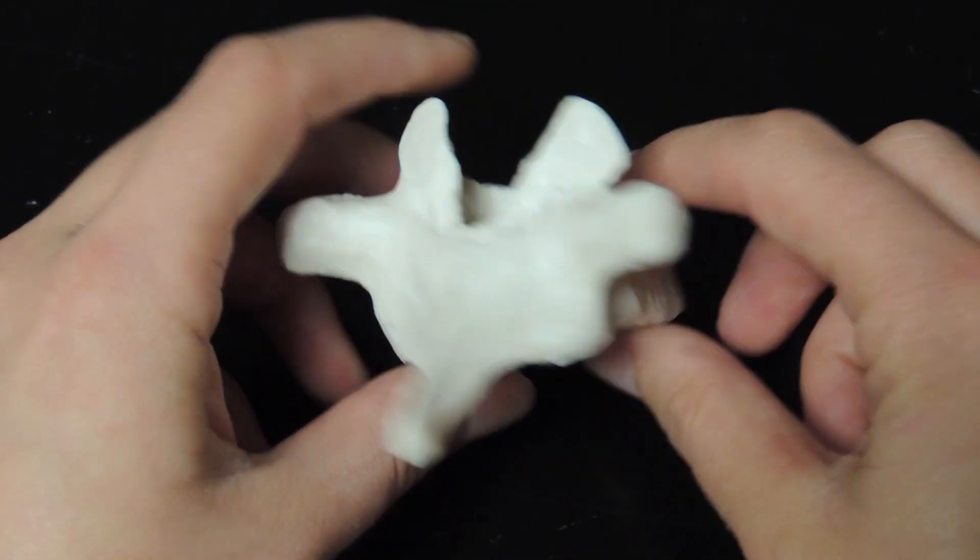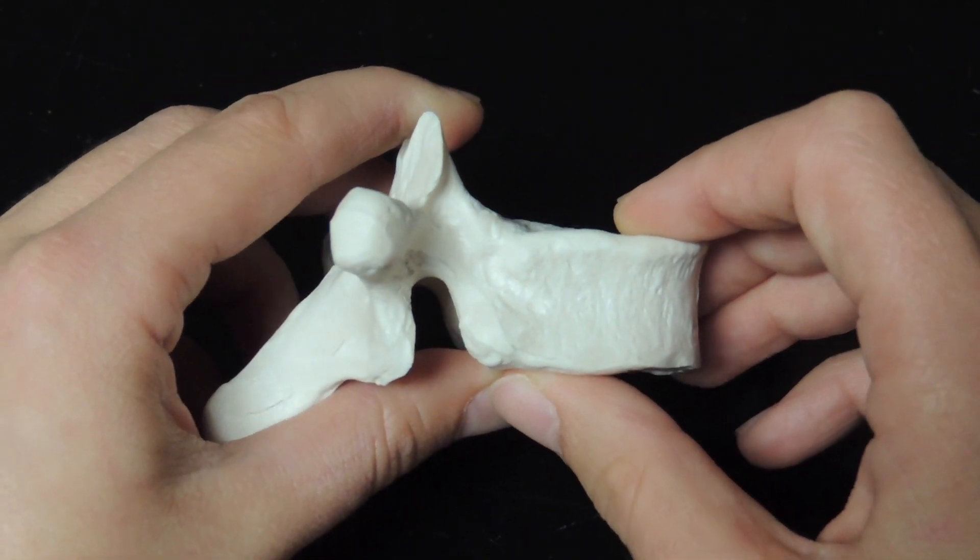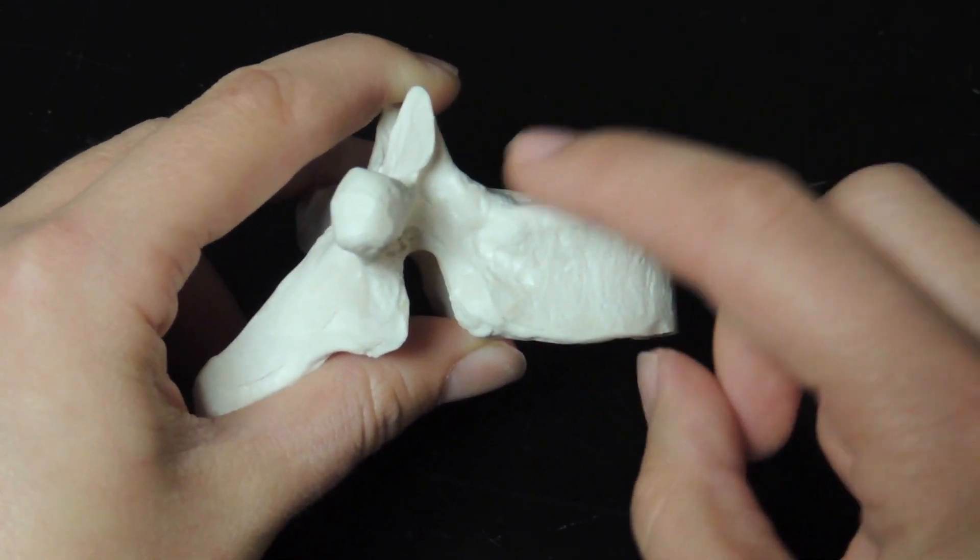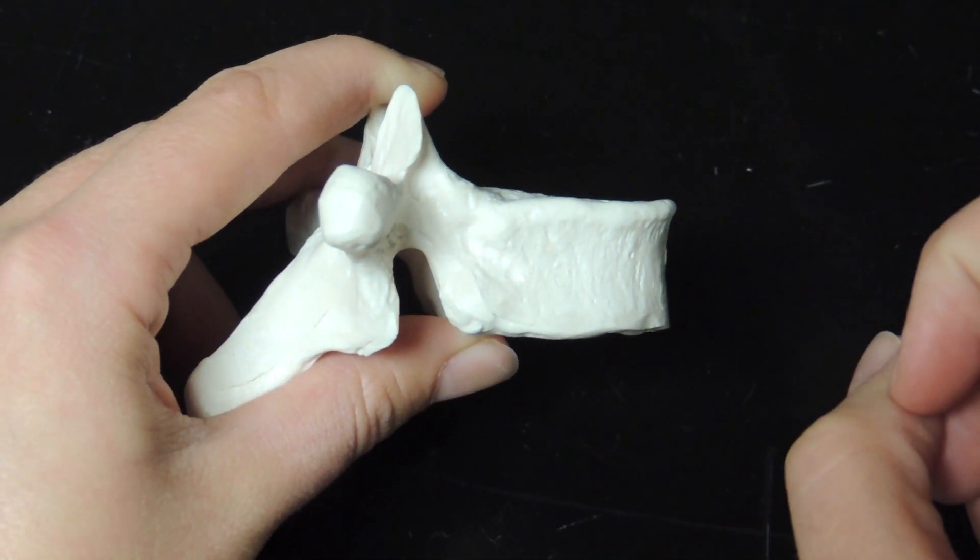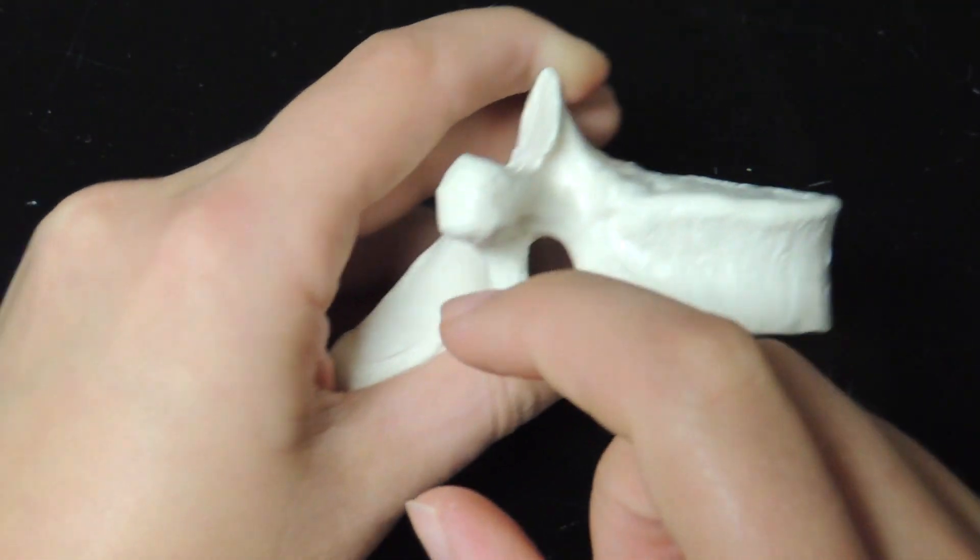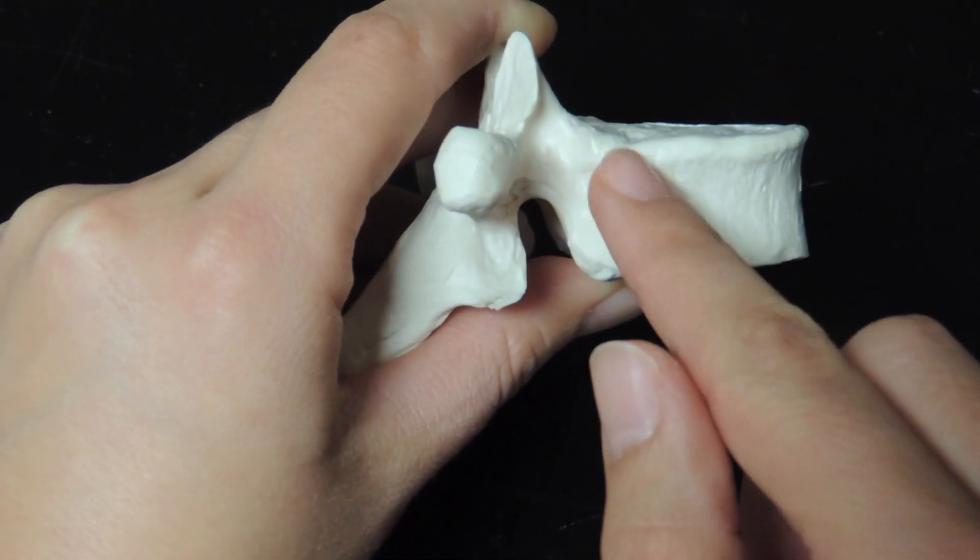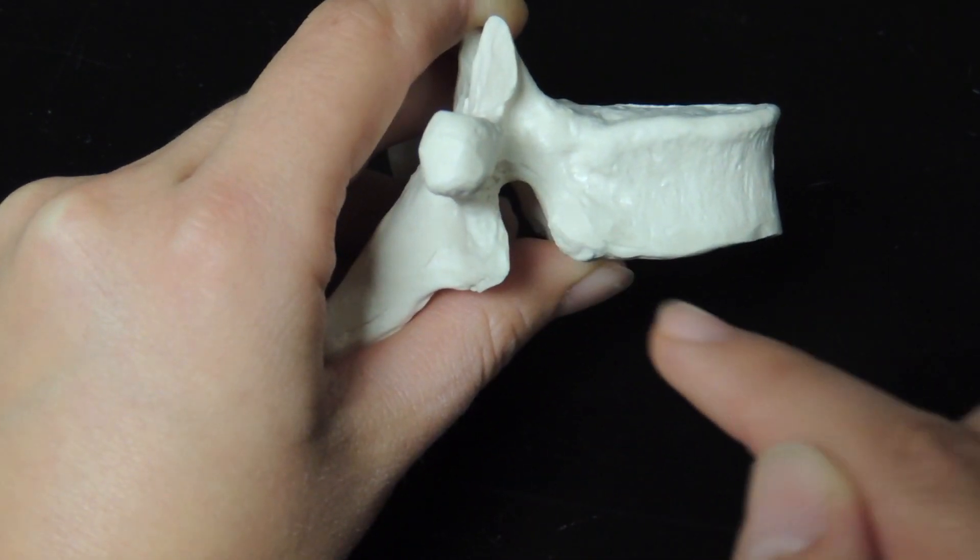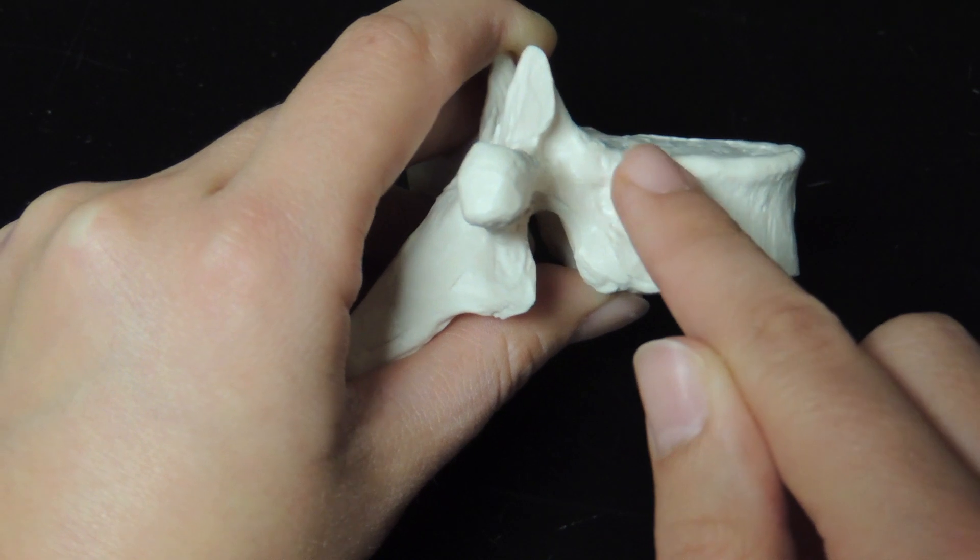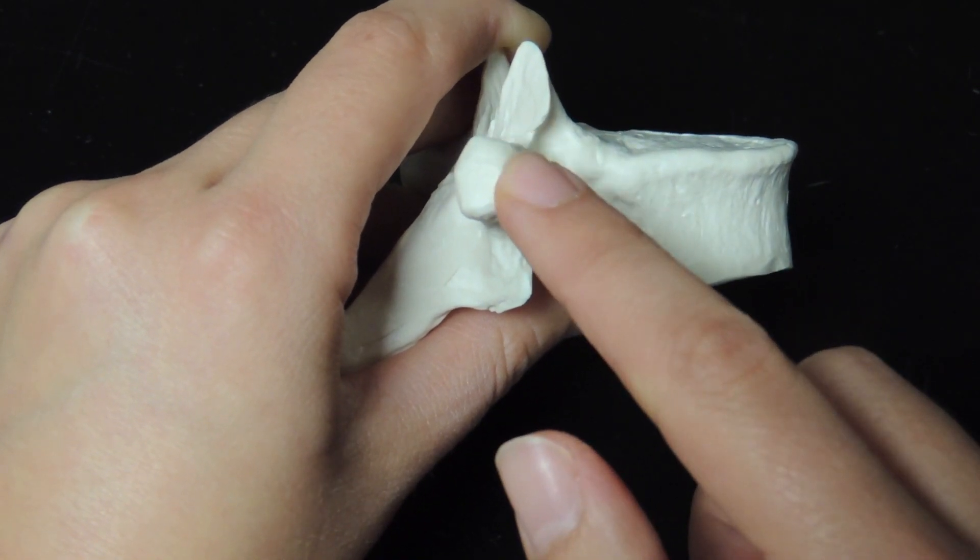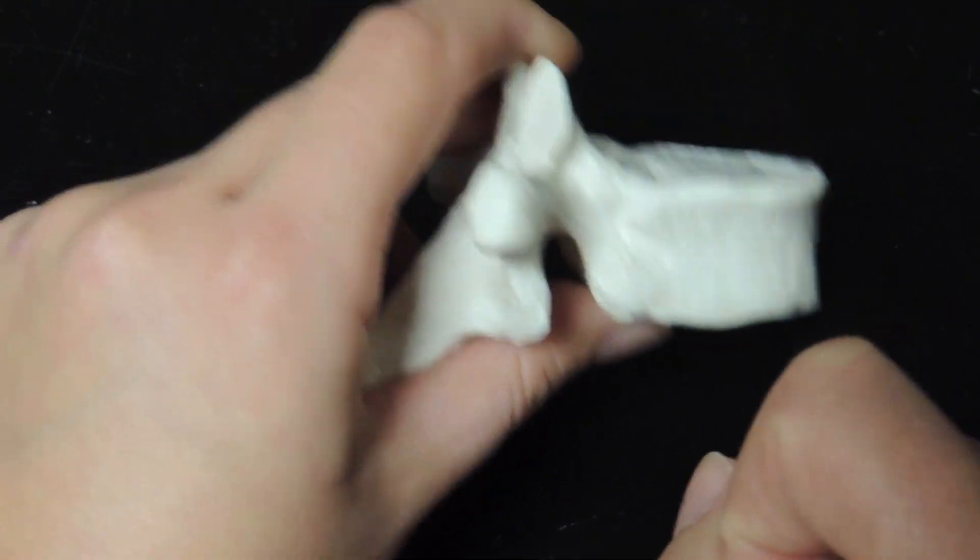But the thoracic vertebrae has a special feature: the superior and inferior costal facets, as well as the transverse costal facet. This is where the rib attaches—on the body of the thoracic vertebrae and on the transverse process. You've got those three specific landmarks.